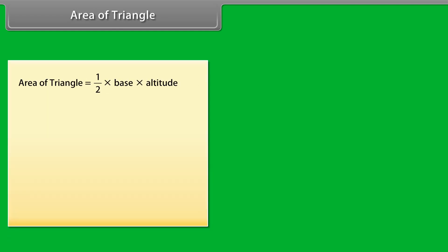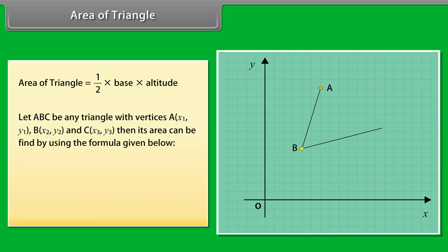Area of triangle. In earlier classes when the base and altitude of triangle is given, then we find its area by using the formula area of triangle is equal to 1 by 2 into base into altitude. Let ABC be any triangle with vertices A(x1, y1), B(x2, y2), and C(x3, y3), then its area can be defined by using the formula given below. Area of triangle equals 1 by 2 into x1 into y2 minus y3 plus x2 into y3 minus y1 plus x3 into y1 minus y2.